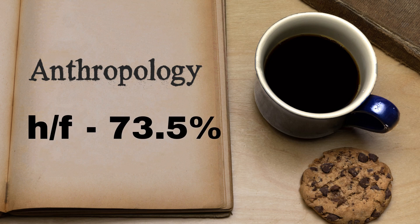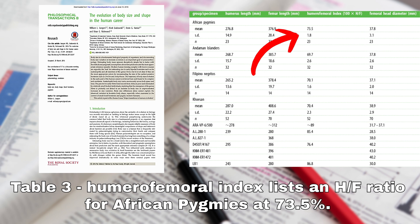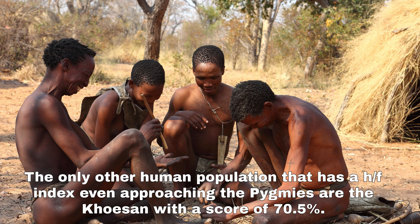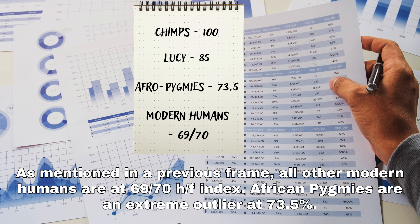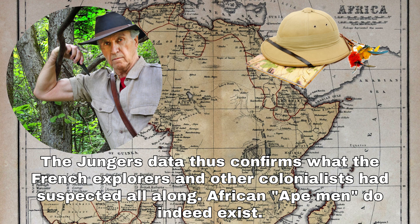Table 3 from the study lists a humeral femoral index for African pygmies at 73.5%. The only other human population approaching the pygmies is the Khoisan with a score of 70.5%. All other modern humans are at 69 or 70 HF index. African pygmies are an extreme outlier at 73.5%. The Jungers data thus confirms what the French explorers and other colonialists had suspected all along — African ape-men do indeed exist.